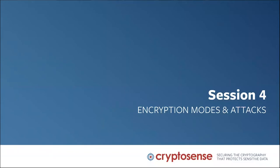Hello, I'm Graham Steele, CEO and founder of CryptoSense, and welcome to session four of our crypto and cryptography risk training. If you were with us for the first three sessions, you'd have had an overview of cryptography and how it can go wrong. In session three, we went deep into understanding what an encryption function is — a cipher. And now in today's session, we're going to look at encryption modes and how they give rise to attacks when they're incorrectly used.